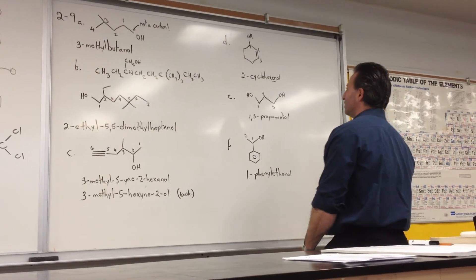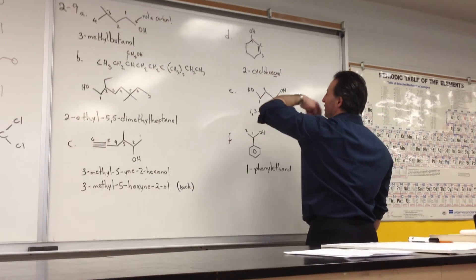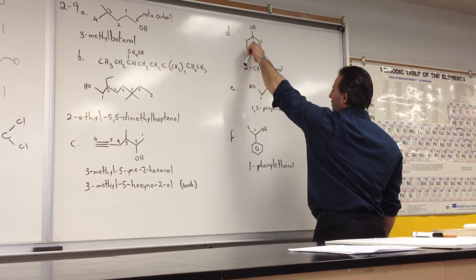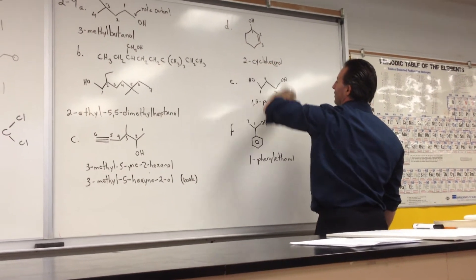This is a cyclohexyne with an alcohol on it. Alcohol takes precedence over the alkyne. So the numbering starts at the alcohol group, the hydroxy group. So it's 2-cyclohexen-1-ol.